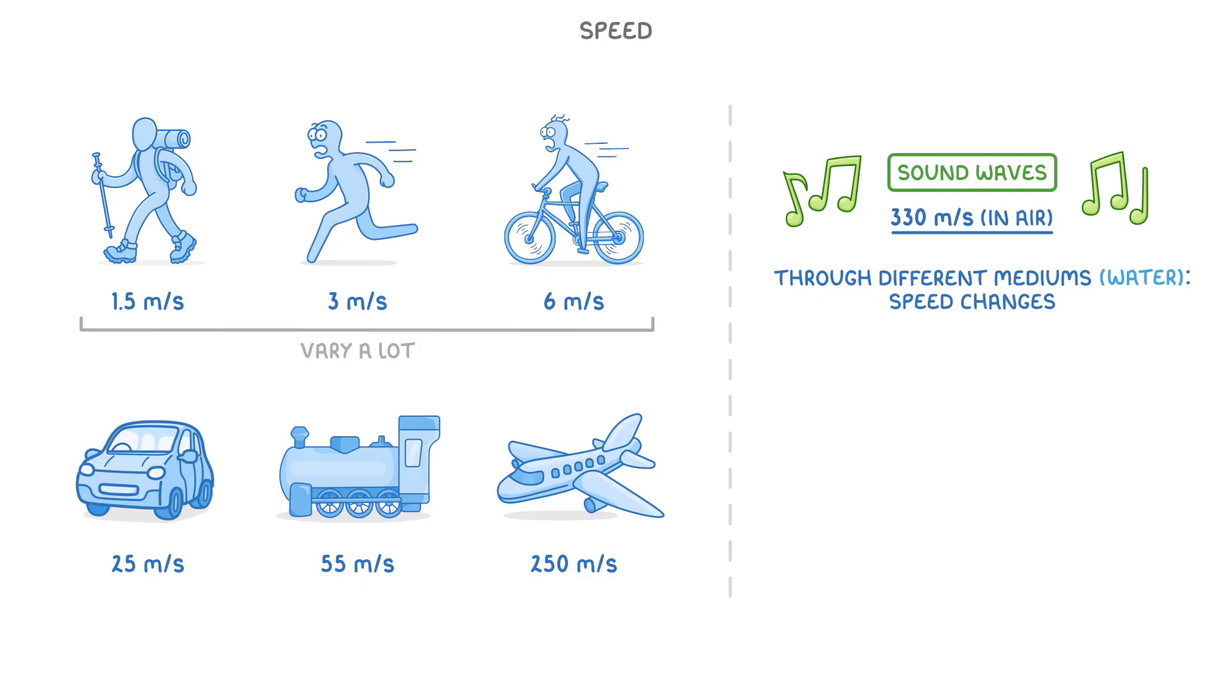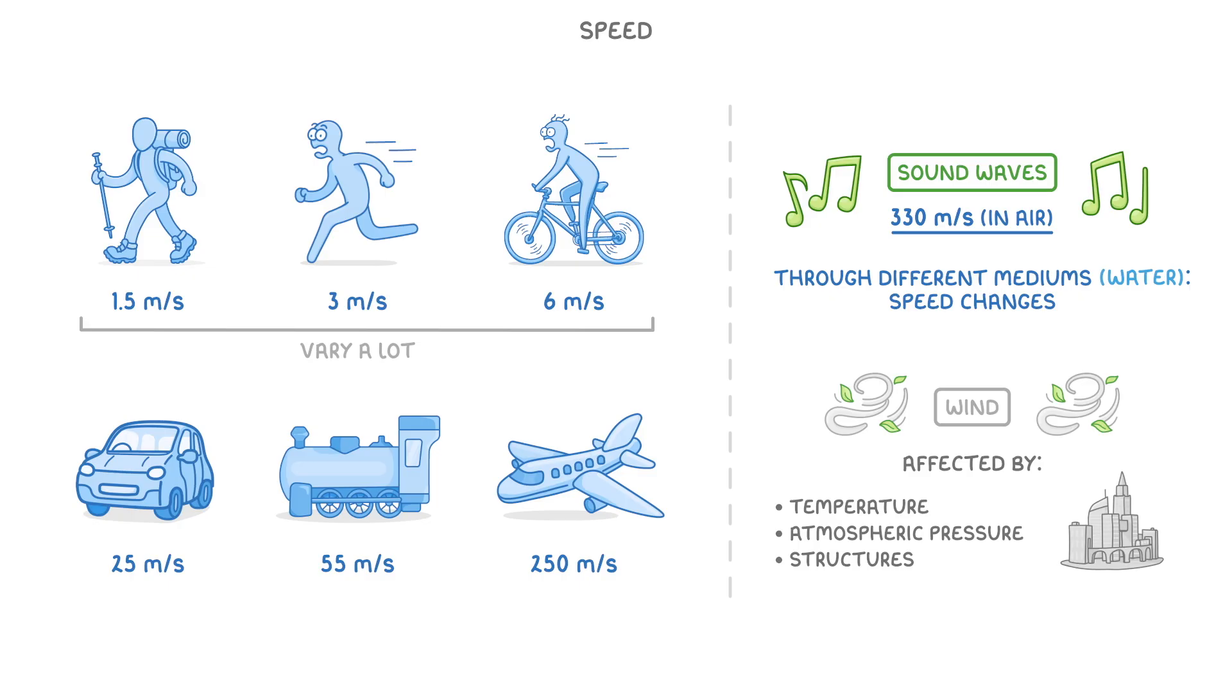A more relatable example is the wind, which is just the natural movement of air. This can vary from almost 0 metres per second on a still day, to faster than a speeding train on a windy day, and can be affected by things like temperature, atmospheric pressure, and the structures it's travelling past, like buildings or mountains.